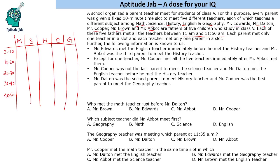Now we are given certain hints. First, Mr. Edwards met the English teacher immediately before he met the History teacher. Second, Mr. Abbott was the third parent to meet the History teacher. Third, except for one teacher, Mr. Cooper met all 5 teachers immediately after Mr. Abbott. So for almost all teachers, we have an Abbott–Cooper arrangement.